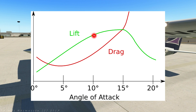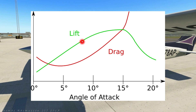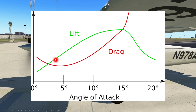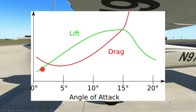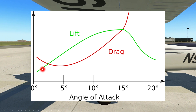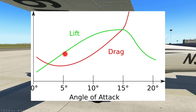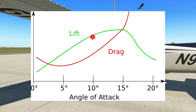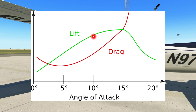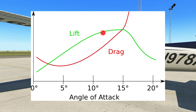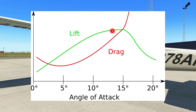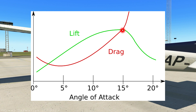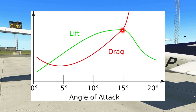Wings can efficiently produce lift over a narrow range of angles. If the air is flowing straight onto the leading edge of the wing, its angle is zero degrees. If we tilt the leading edge of the wing upward 10 degrees, then the wing is at an angle of attack of 10 degrees. The maximum angle of attack at which the wing will produce lift efficiently is known as a critical angle, and will vary depending on the wing planform and airfoil shape.